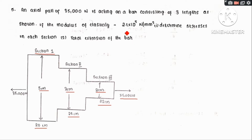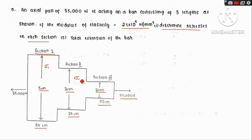The modulus of elasticity is 2.1 × 10⁵ N per mm². We need to find stresses in each section. The stress formula is sigma = P by A. So sigma 1 is P by A1, sigma 2 is P by A2, and sigma 3 is P by A3, because the load P is constant throughout all sections acting on the respective area.